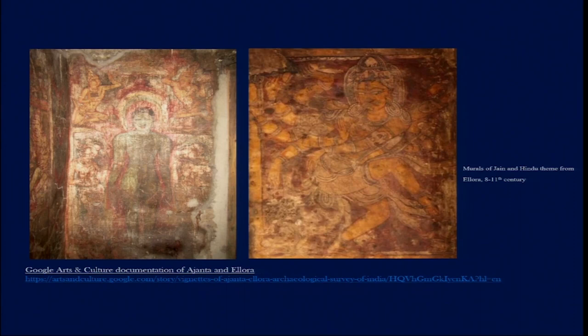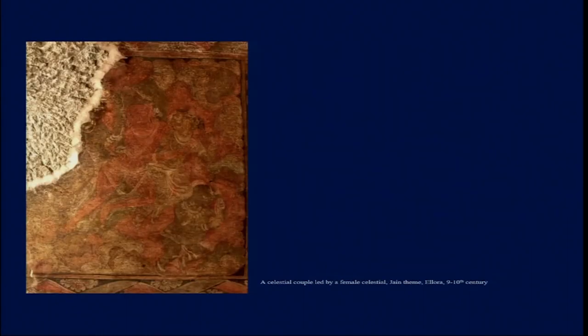We are not making a value judgment here — we are not saying the Ajanta murals are superior to the Ellora murals. The differences are more important than a value judgment of better or worse. From there, we also want to bring attention to the materiality of these paintings. This particular image comes from one of the Jain caves and was perhaps made between the 9th and 10th century AD.